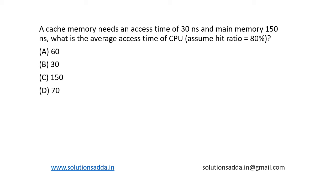This is a question from computer organization. A cache memory needs an access time of 30 nanoseconds and main memory 150 nanoseconds. What is the average access time of the CPU? Assume hit ratio to be 80 percent.